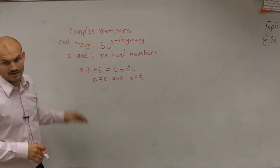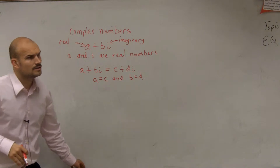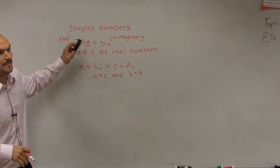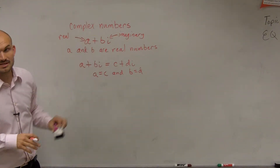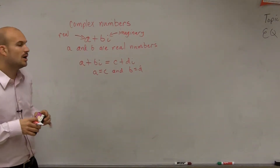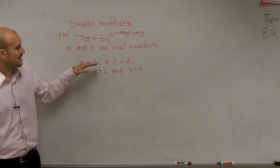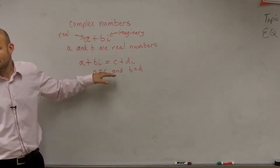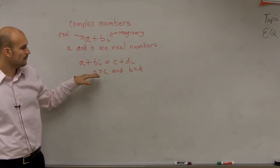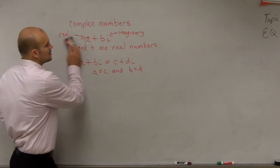Ladies and gentlemen, we talked about complex numbers. One thing about complex numbers: we have a plus bi. We talked about the equality of complex numbers, where if a plus bi is equal to c plus di, therefore a equals c and b equals d.